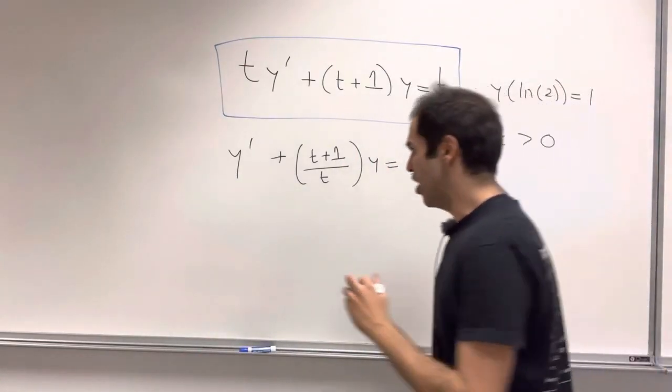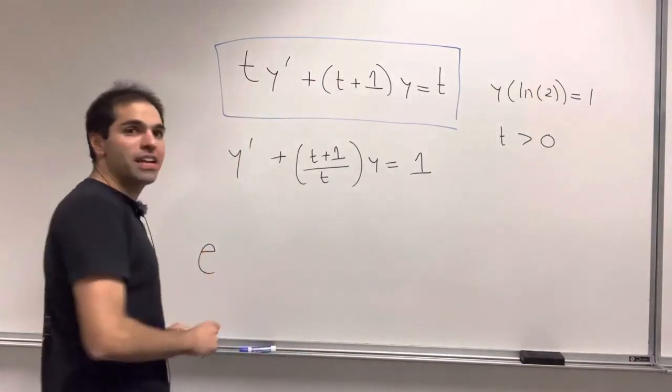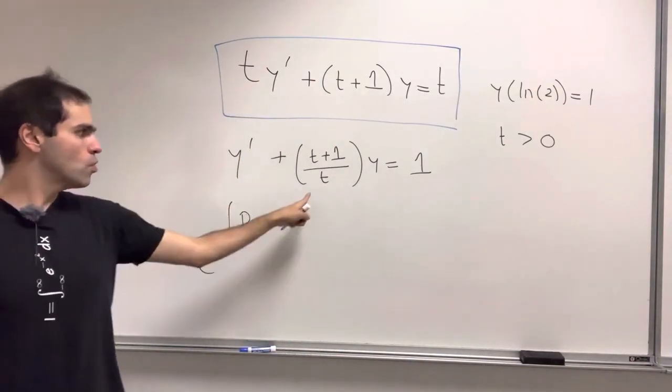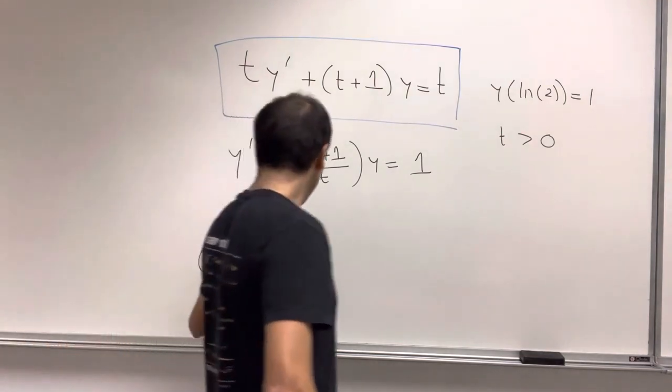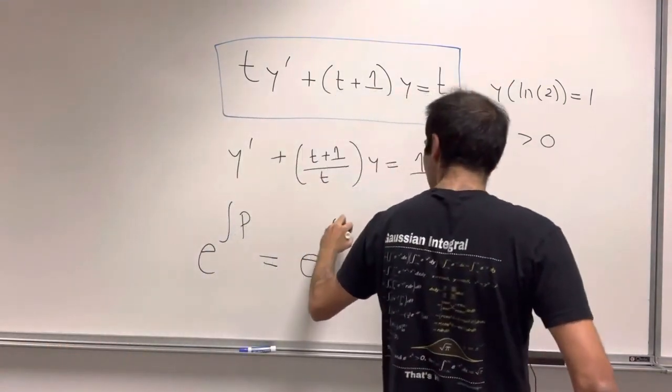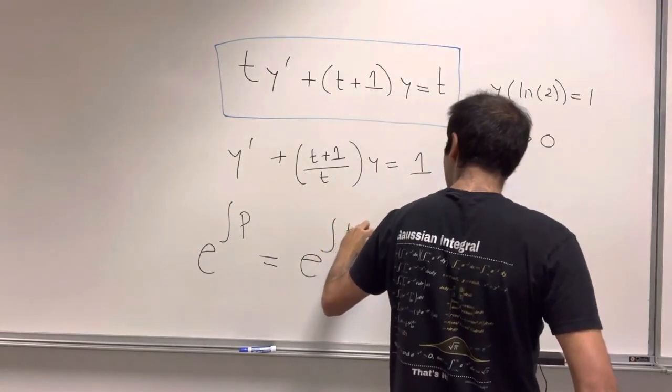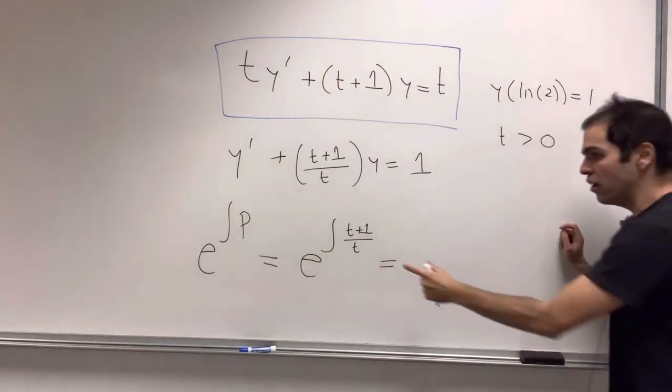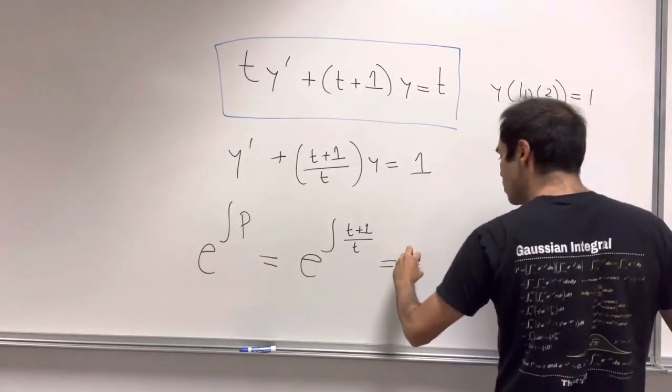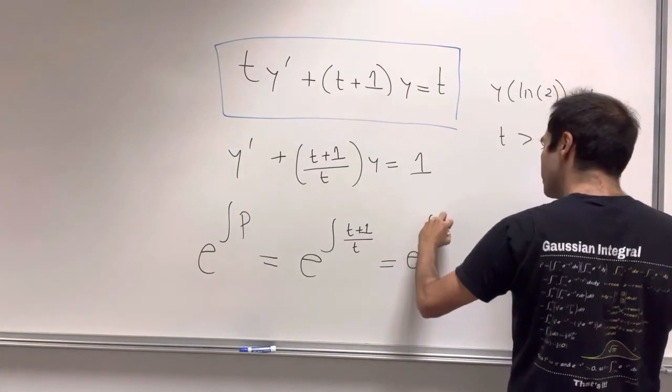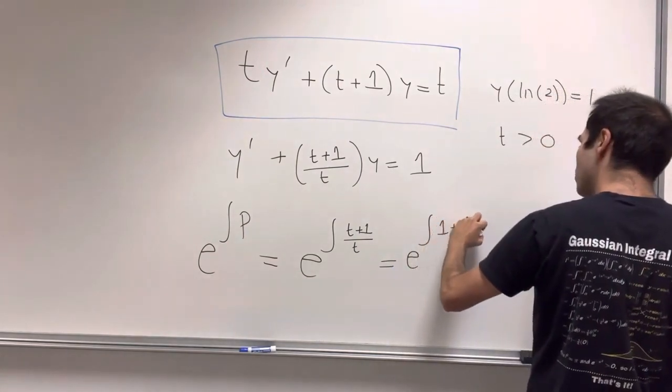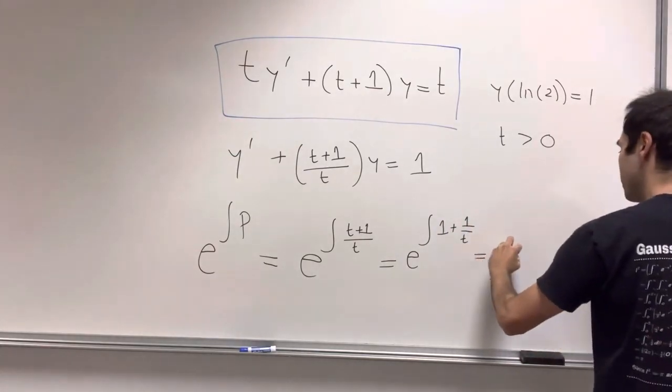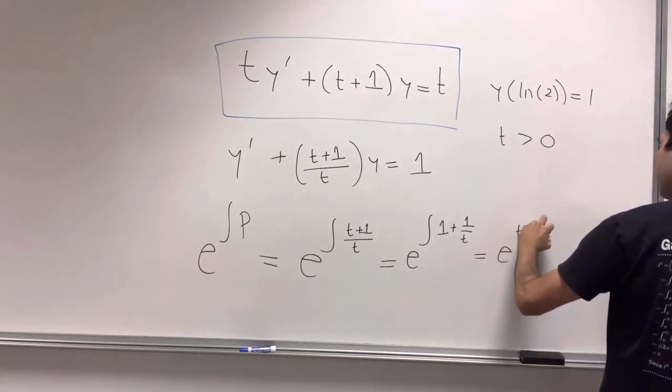Well, it's as easy as Yelp, because you literally multiply it by e to the integral of p, where p is this function here. So here we get e to the integral of (t+1)/t dt, but you can separate out this function to integrate it. So we get e to the integral of 1 + 1/t, and then that just becomes e to the (t + ln(t)).